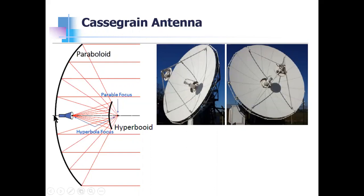The feed placed can be either at the vertex or in front of it. The larger primary reflector has a parabolic contour, and the secondary reflector — called the subreflector — has a hyperbolic contour. One of the foci of this hyperbola is the real focal point of the system. The feed is located at this point, which can be at the vertex of the parabola, though usually it is placed in front of it.